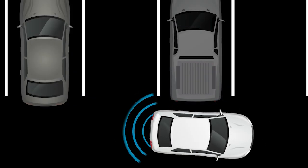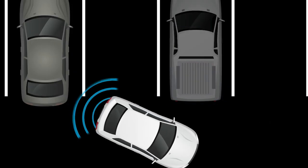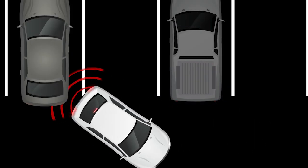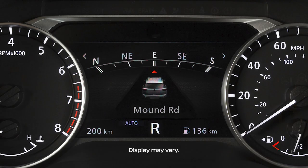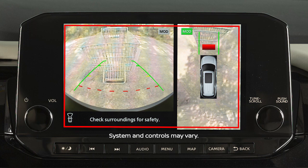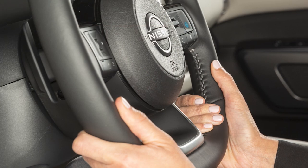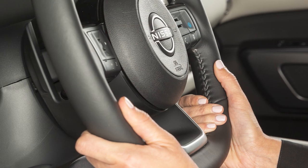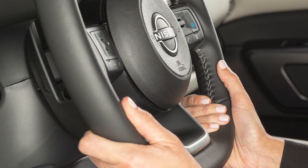If an obstacle is detected when your vehicle is backing up, the RAB system warning indicator will flash in the vehicle information display. A red frame will appear in the center display, if so equipped, and the system will chime three times.